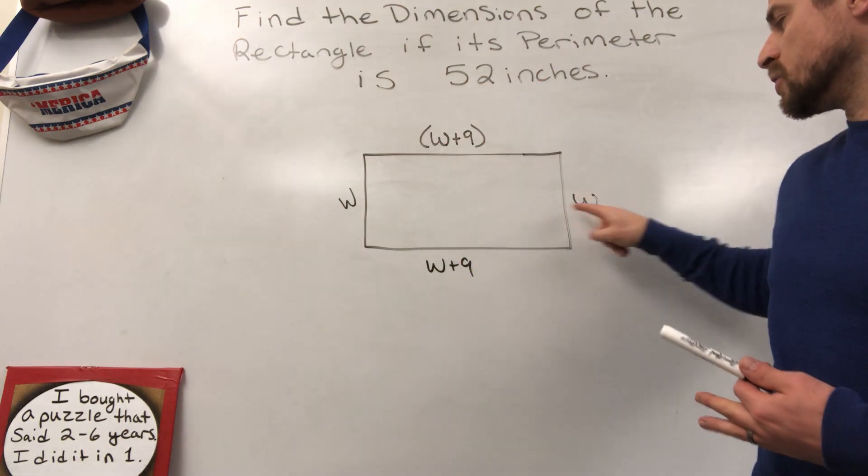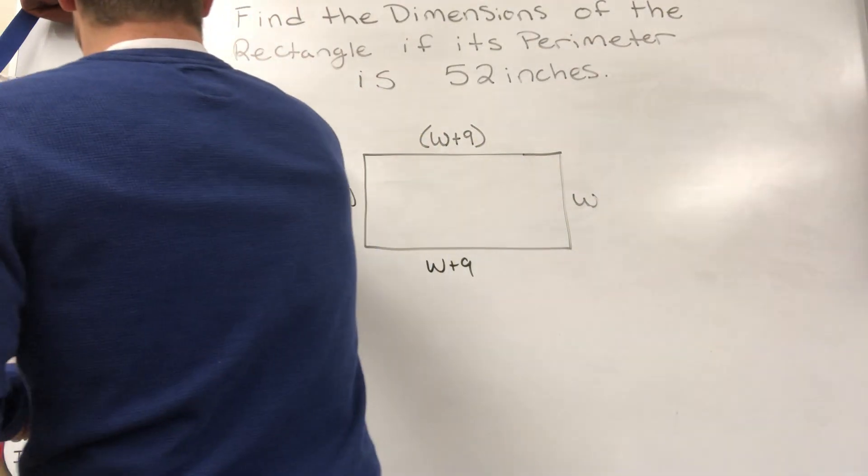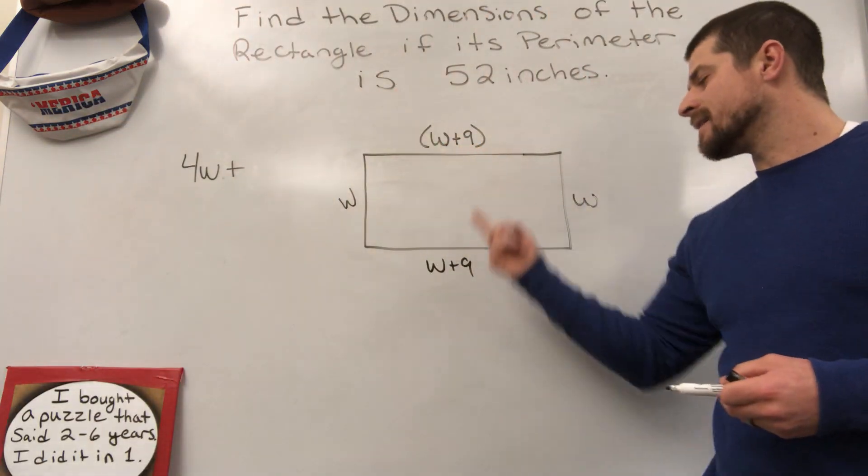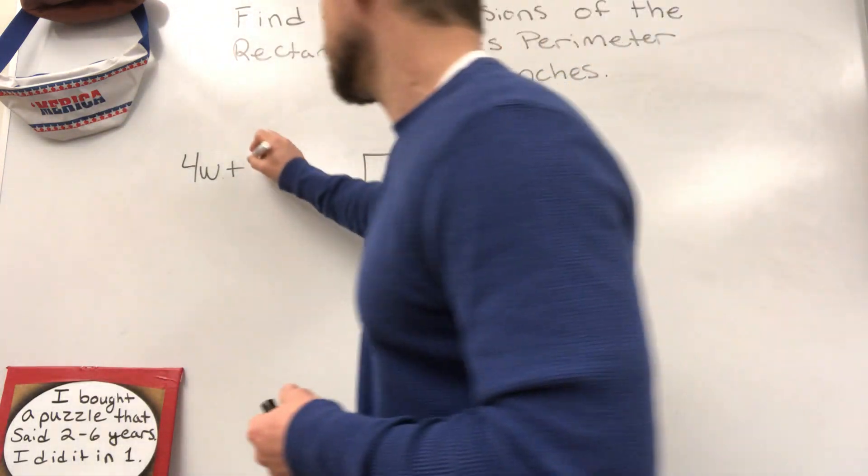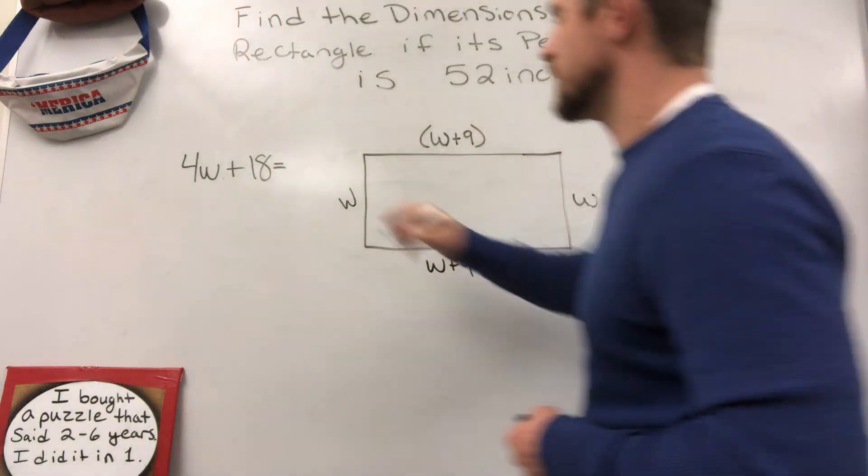So, I got 1, 2, 3, 4 W's. Those are my like terms right there. So, we're going to say 4W plus, I have this 9 and this 9, which is going to combine to give me a total of 18. And we know that that has to equal 52 inches.